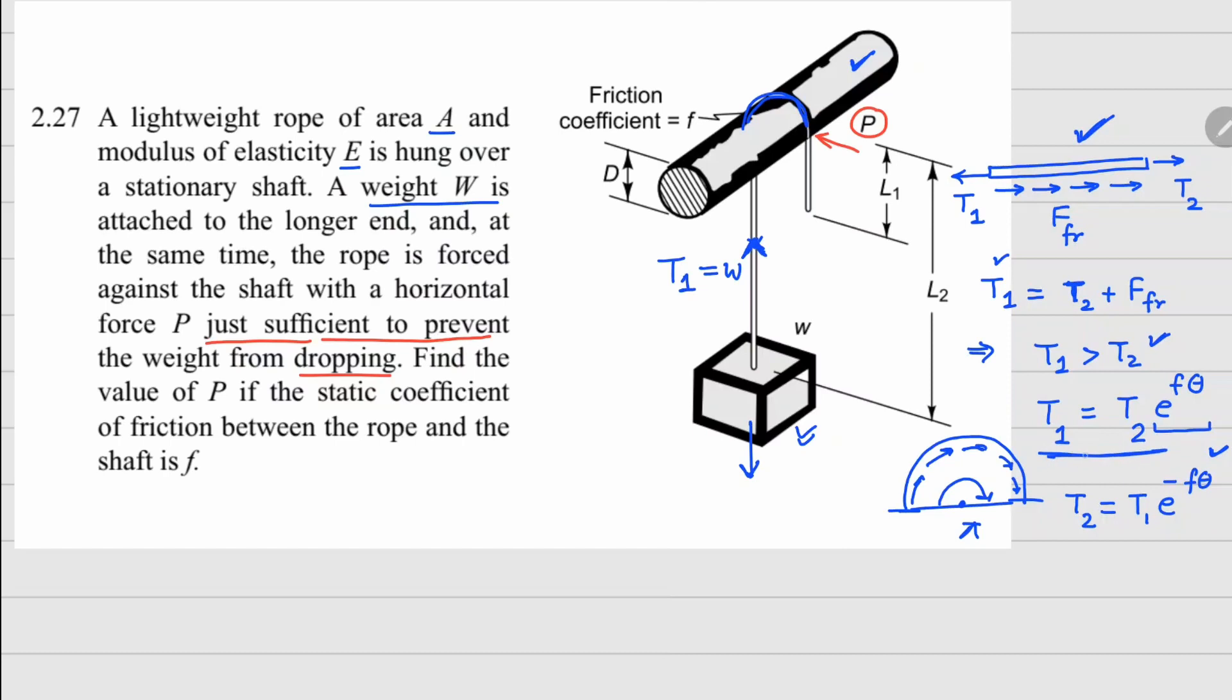Now we have this relationship between T₁ and T₂. I can replace the value of T₁, which is W, so that T₂ equals W times e to the power minus f theta.